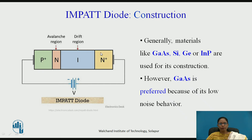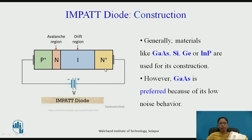The construction of the IMPATT diode is like this. It is nothing but a semiconductor wafer, generally of gallium arsenide, silicon, germanium, or indium phosphide. It has a heavily doped P region on one side and a heavily doped N region on the other side, and in between there is a drift space and a small avalanche region. These diodes work in the avalanche region so they are reverse biased — N is connected to the positive of the supply and P to the negative. Gallium arsenide is preferred over other wafer materials because of its low noise behavior.